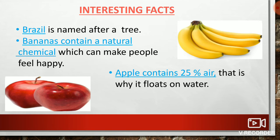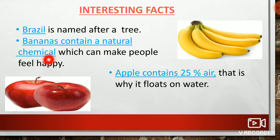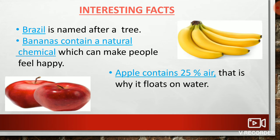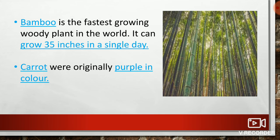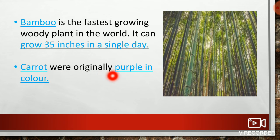Students, shall we learn some interesting facts about plants? Brazil is named after a tree. Bananas contain a natural chemical which can make people feel happy. Apples contain 25% air — that's why they float on water. Bamboo is the fastest growing woody plant in the world and can grow 35 inches in a single day. Carrots were originally purple in color.